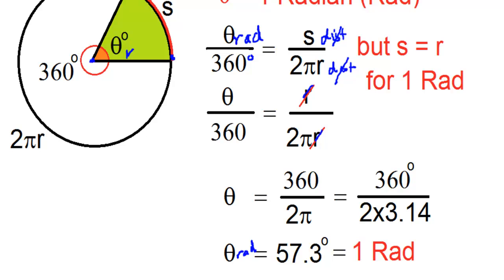So a full revolution, 2π radians, means 6.28 radians per circle. In other words, we don't really know exactly how long that is,